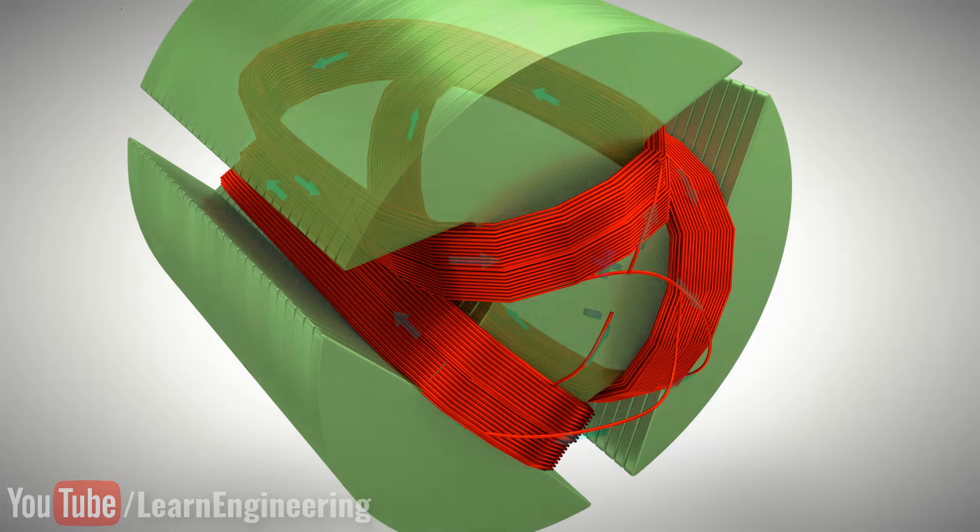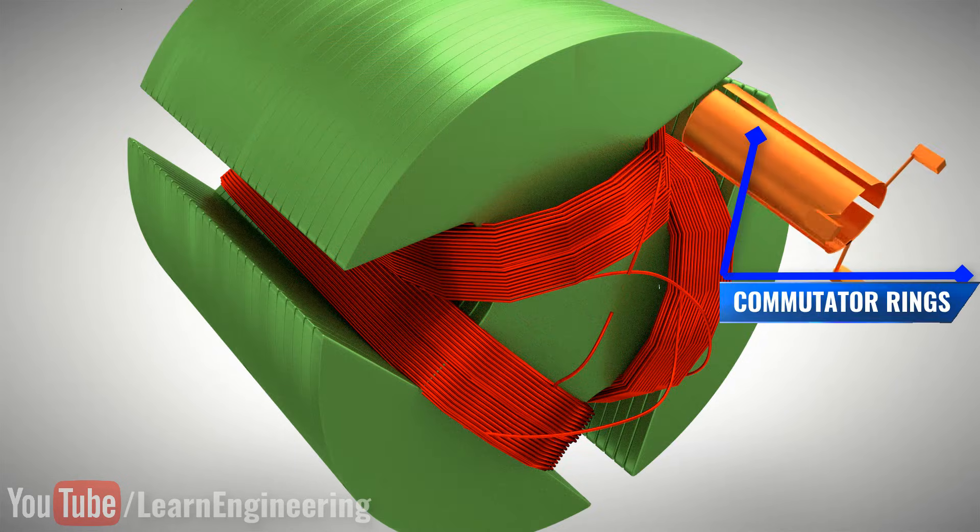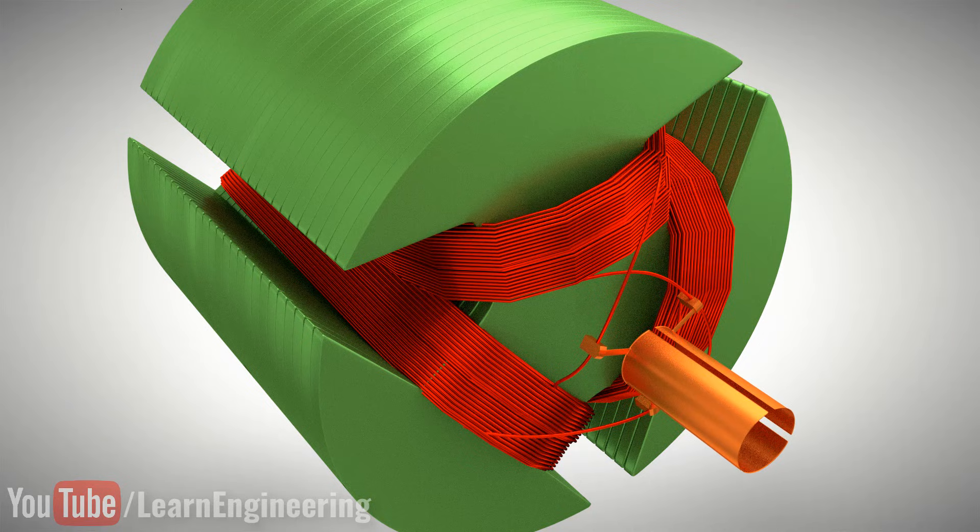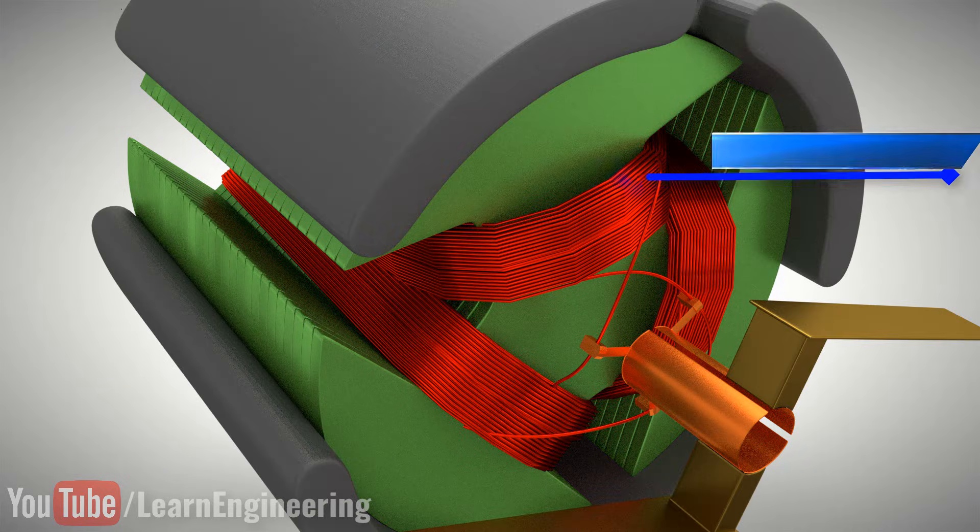The rotor coil is connected with three commutator rings, as shown. Each commutator ring sits between the coil pair. DC power is supplied to the commutator rings via a pair of brushes.